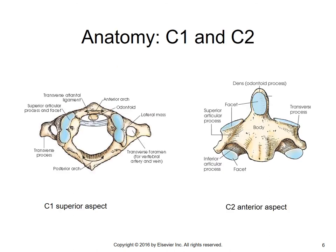Here are two pictures of the anatomy of C1 and C2. Note that there is a ligament in C1 called the transverse atlantal ligament that separates the odontoid from where the spinal cord would be. You have the transverse foramina, and on C2 the dens or the odontoid — that tooth-like process.